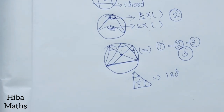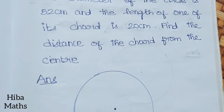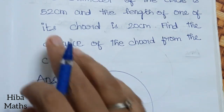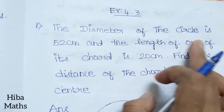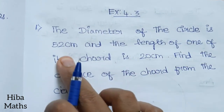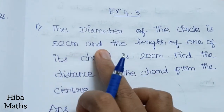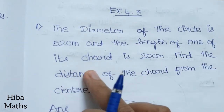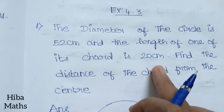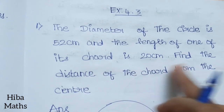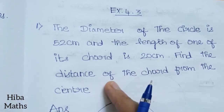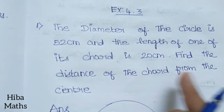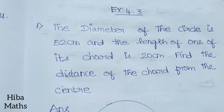Let's solve the first problem. The diameter of the circle is 52 cm and the length of one of its chords is 20 cm. Find the distance of the chord from the center.